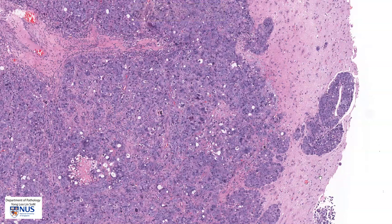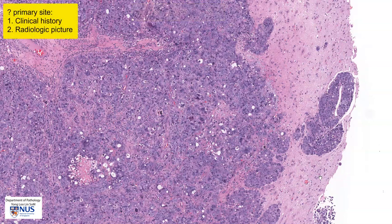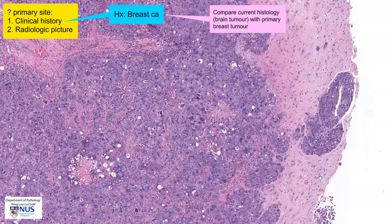In order to ascertain the likely primary site, the clinical history and the radiologic picture are very important. This patient had a history of breast carcinoma. To confirm whether this is indeed metastatic breast carcinoma, we can compare the histologic appearance of this brain tumour with the original histologic appearance of the breast carcinoma to see if they look similar. We can also apply some immunohistochemical markers, as there are markers that are more frequently expressed in breast carcinoma.